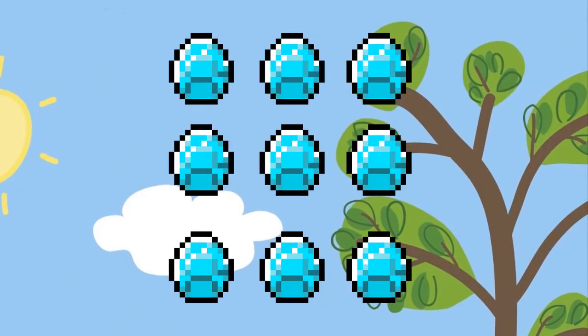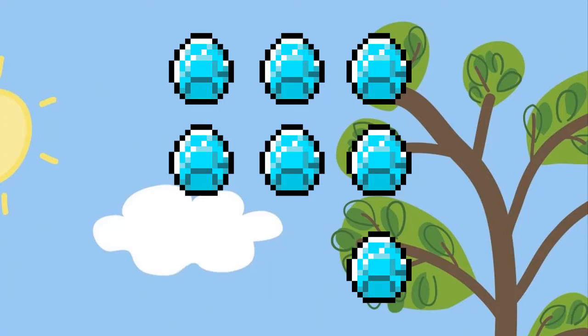Let's have a look at the next problem. Steve loves diamonds. Steve has nine diamonds, but he needs three diamonds to make a pickaxe. How many diamonds does Steve have left? Steve has nine diamonds, he uses three: one, two, three. How many are left? Let's count: one, two, three, four, five, six — there are six diamonds left. So nine minus three equals six. Excellent.